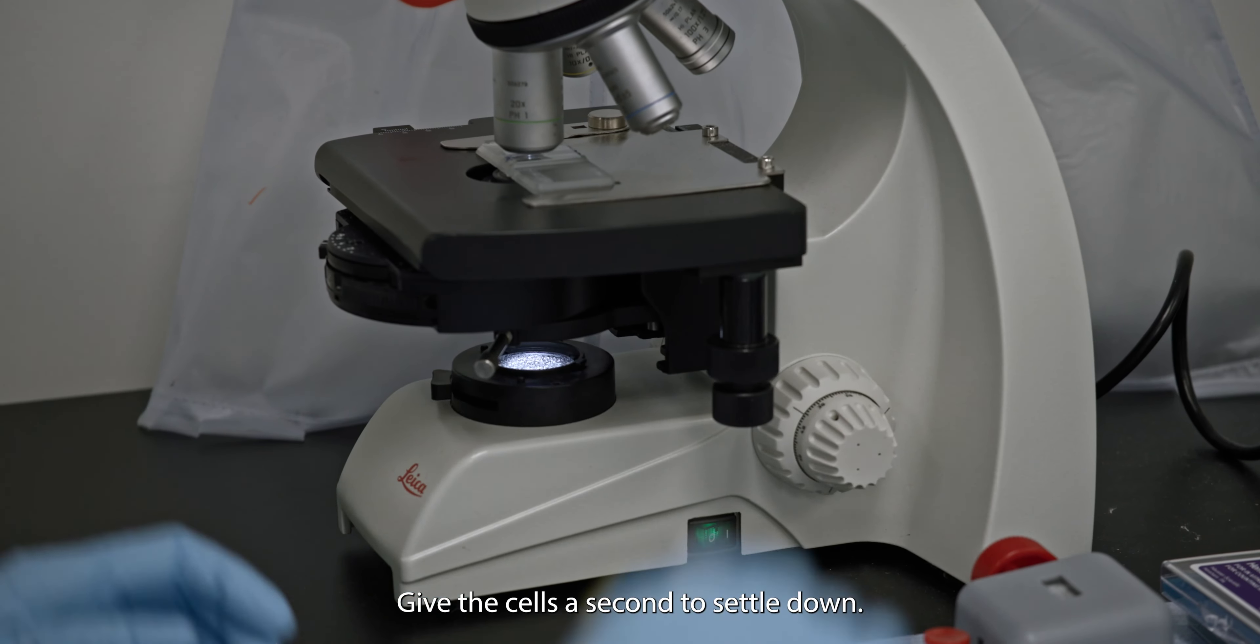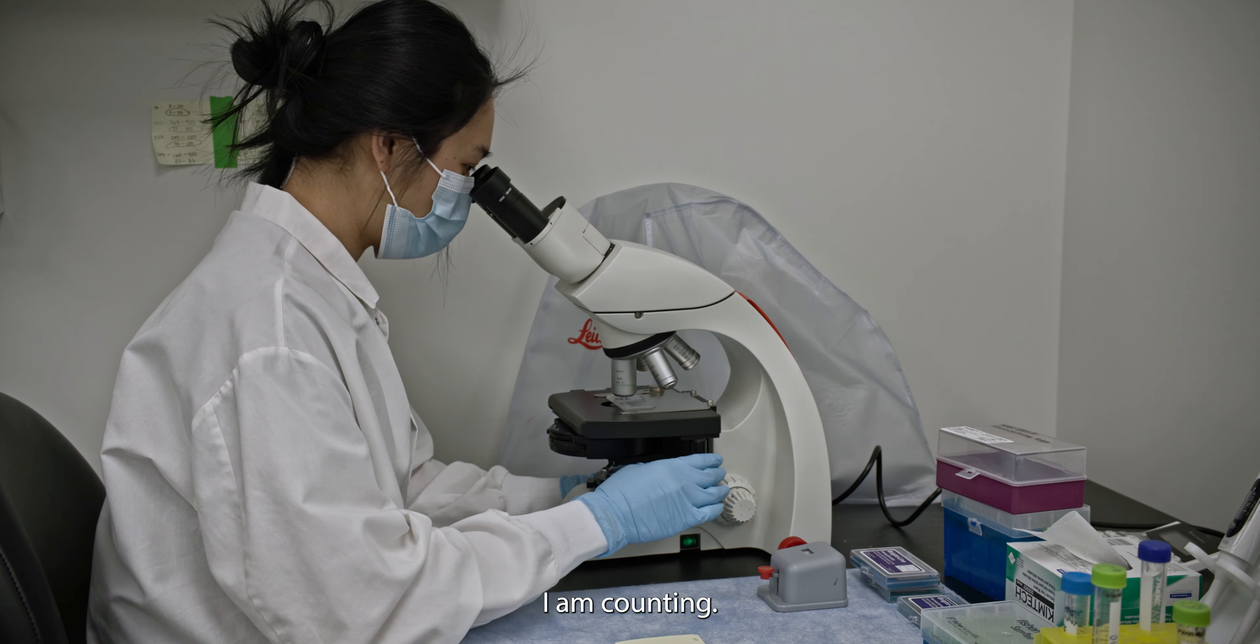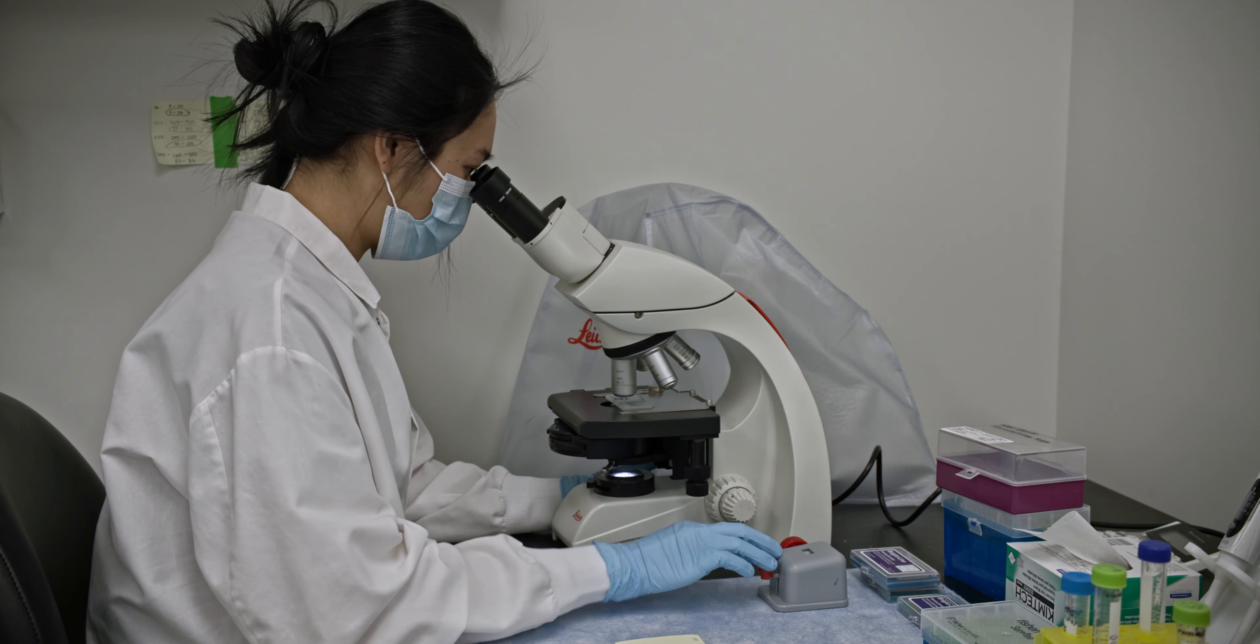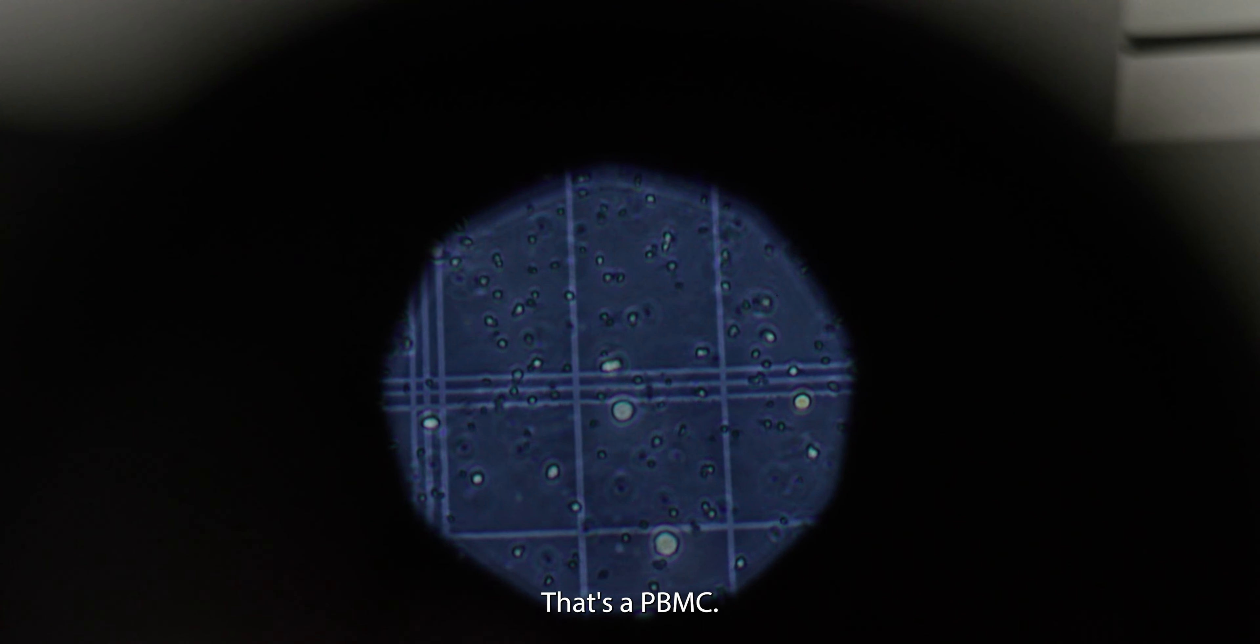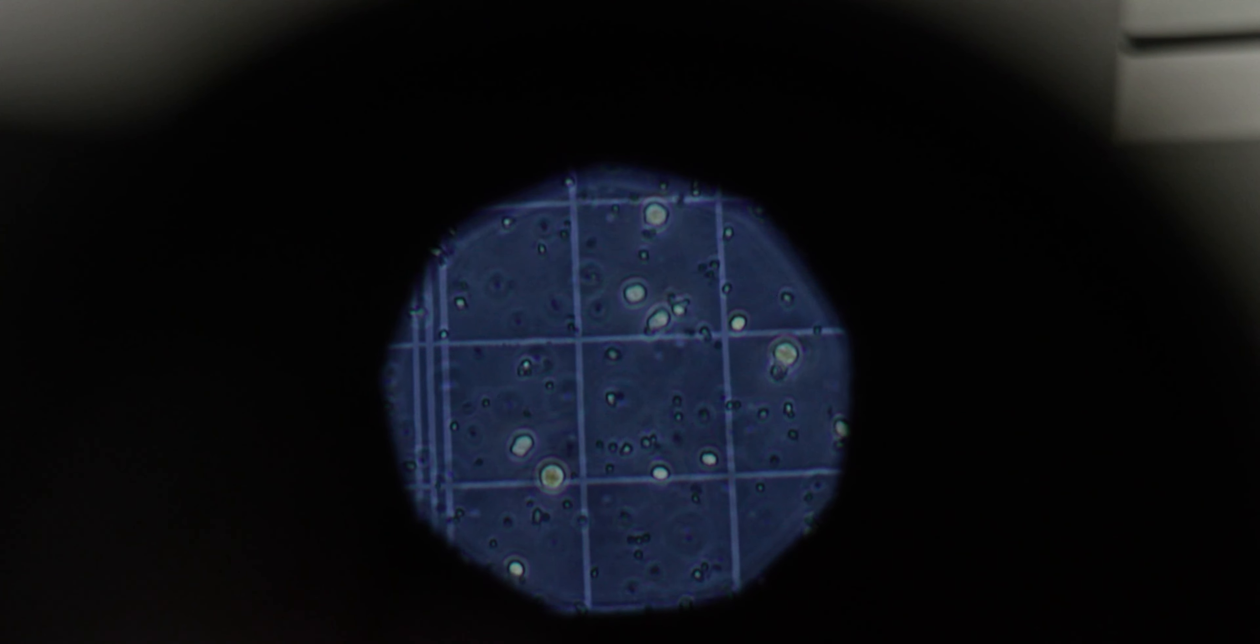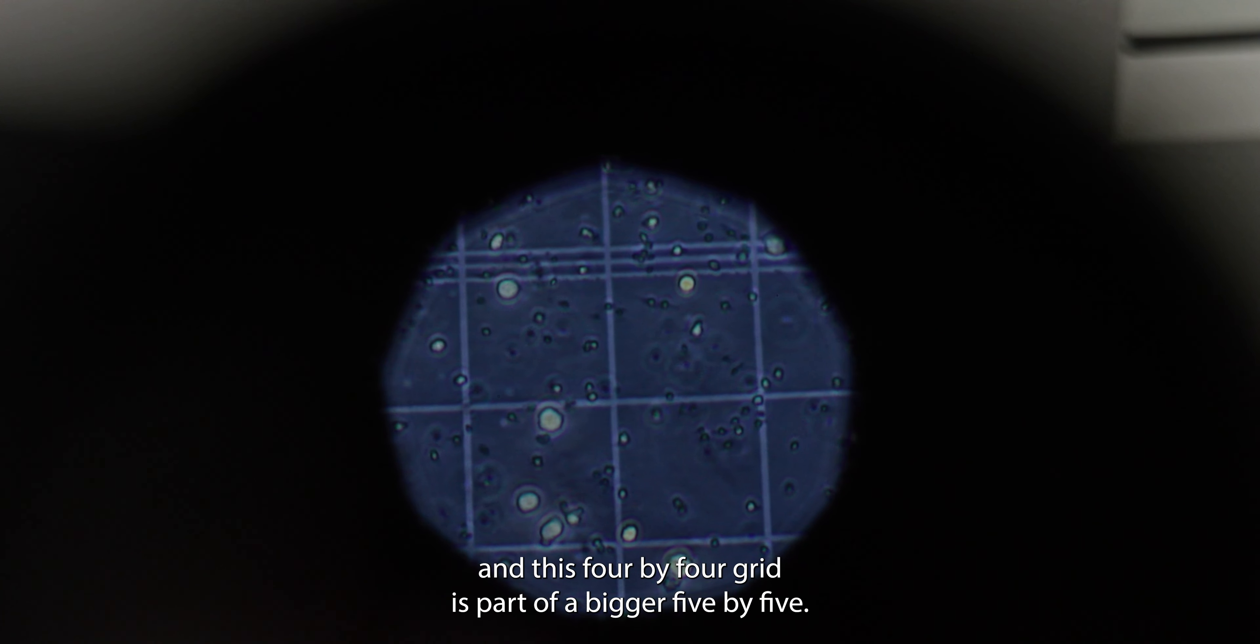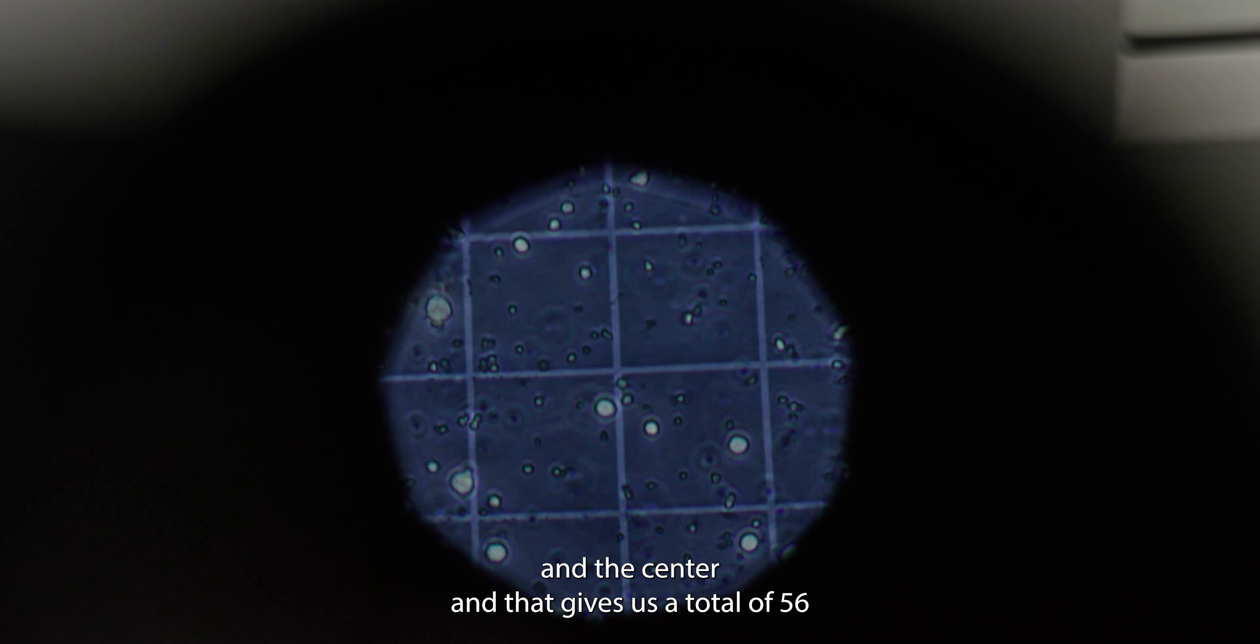So load that. Give the cells a second to settle down. They're still suspended in the liquid a bit. I am counting. Every time I see a cell, I tap it so I don't have to remember the number. So right there on that line is one of the cells that I would count. That's a PBMC. So that's one of the 56 that I counted earlier. And just go in this 4x4 grid and count everything in there. And this 4x4 grid is part of a bigger 5x5. So we go to the other corner of that 5x5 and count all 16. So we count each corner and the center. And that gives us a total of 56 cells.